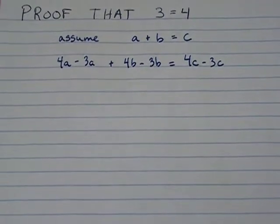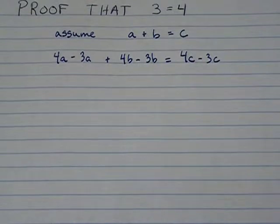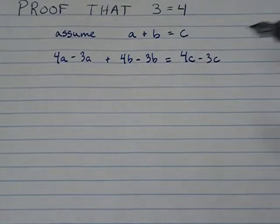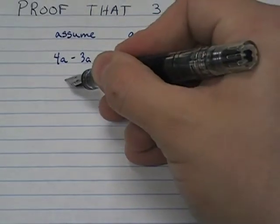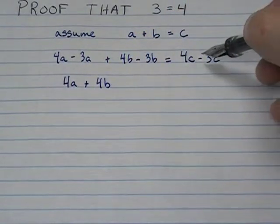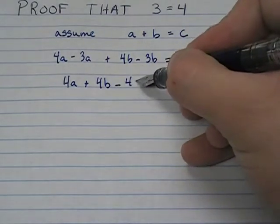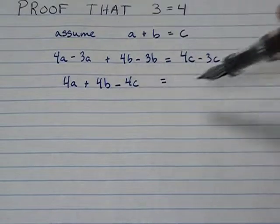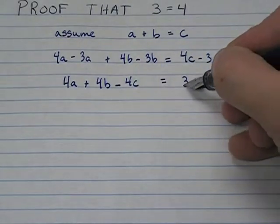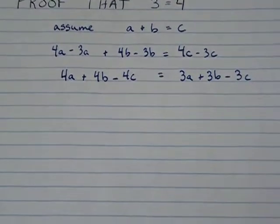So given that original statement, what I want to do is reorganize this. I want to put everything that has a coefficient of 4 on the left. I want to put everything that has a coefficient of 3 on the right. So I have already on the left 4A plus 4B, and then I'm going to move this guy over, so it's minus 4C. And I'm going to move the A and the B over here. They become positive, so I get 3A plus 3B minus 3C.